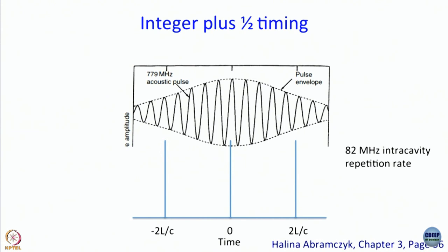Where does 'integer plus half' come from? Remember: maxima at k integer, minima at k + ½. If you divide 779 by 82 MHz you get 9.5, so the integer here is 9, i.e., 9 + ½. What this means is that every 9th pulse goes out; the remaining 8 go back into the cavity. This happens because of the modulated pulses — you have ω₀ ± Ω, different frequencies that superimpose, giving constructive and destructive interference. That is the reason it happens due to modulation.